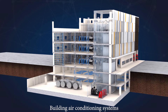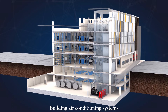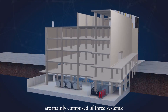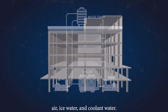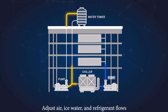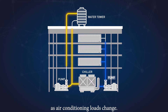Building air conditioning systems are mainly composed of three systems: air, ice water, and coolant water. Adjust air, ice water, and refrigerant flows as air conditioning loads change.